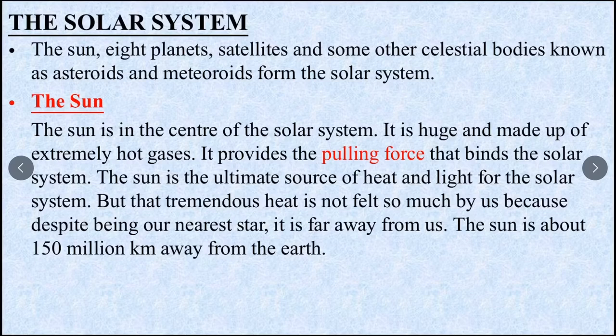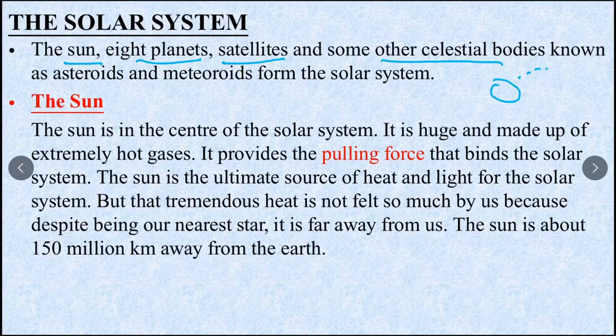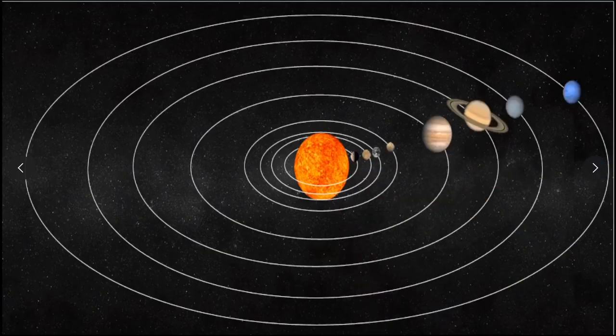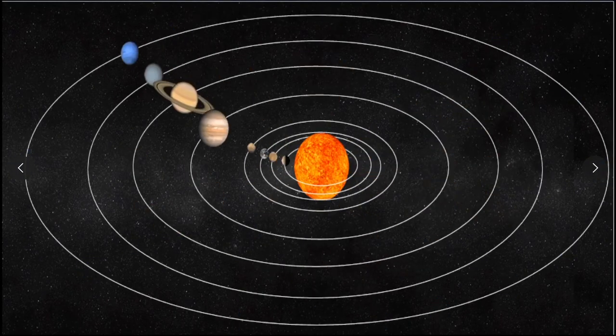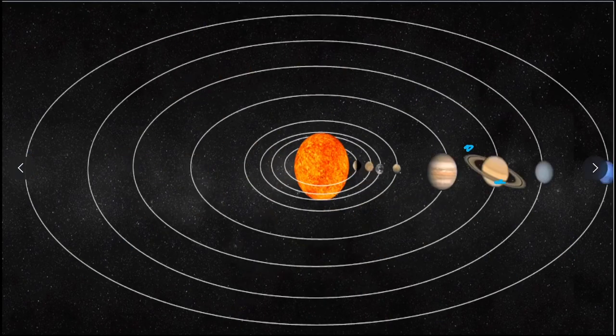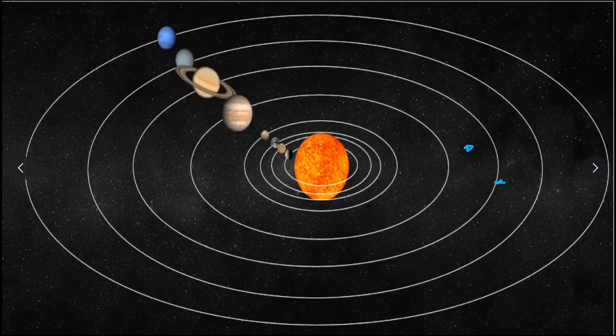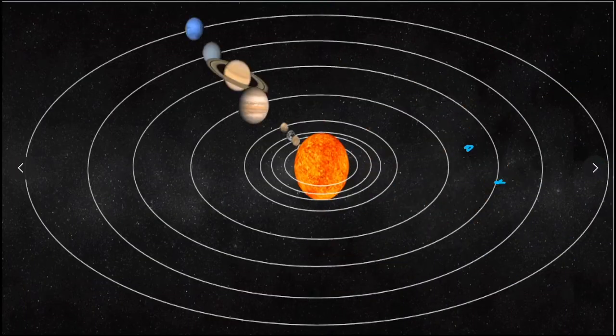Now we go to solar system. Solar system - sun and eight planets, satellites like moon, other bodies known as asteroids and meteoroids form the solar system. See this here, this is our sun, these are the planets revolving around sun. In between there are some asteroids, meteoroids which are also revolving around sun and we call them solar system.